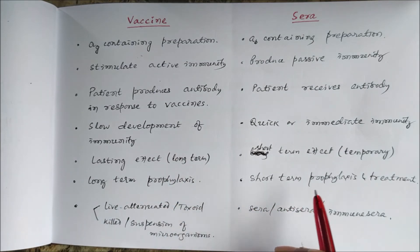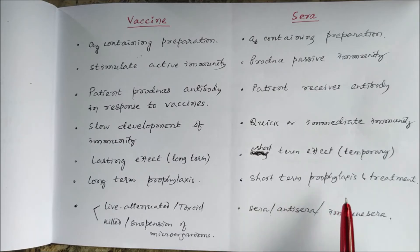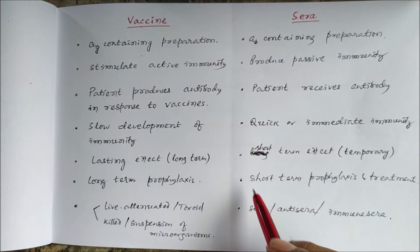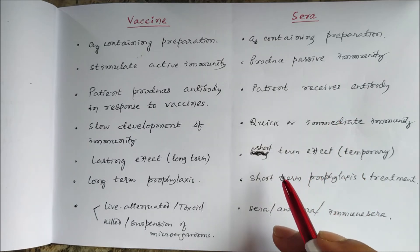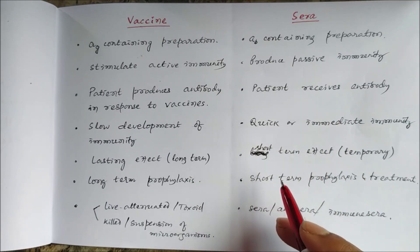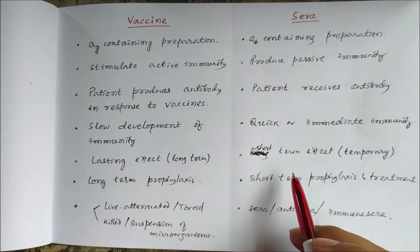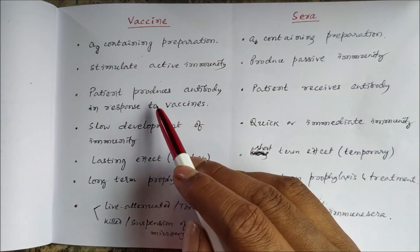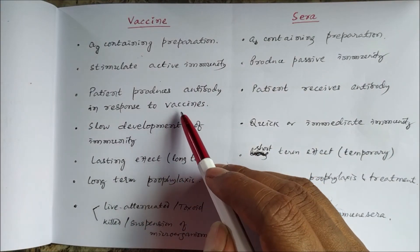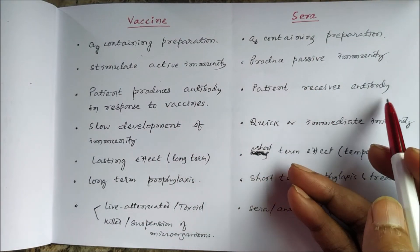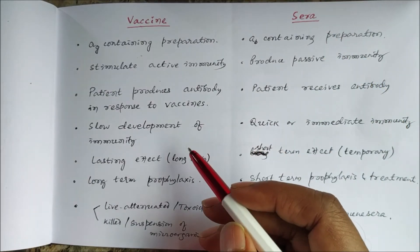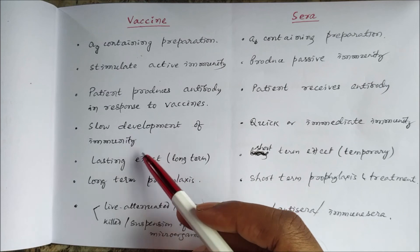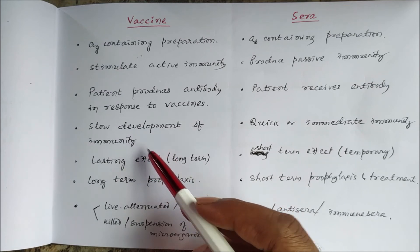In the case of temporary relief — for short-term prophylaxis and treatment — we use sera. We directly introduce the antibody so that immediately the antibody will act against the antigen and the patient will get relief. The patient produces antibodies in response to vaccines, whereas a patient receives antibodies directly through sera. Vaccines take a long time because there is slow development of immunity.